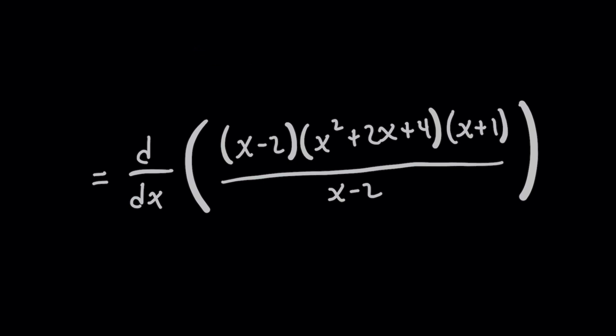Voila! x minus 2 can be knocked out of the top and the bottom, right? Well, there is a catch. You'll have to stick around until the end of the video and comment below if you actually see it.